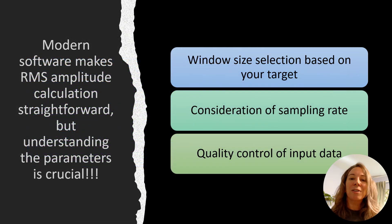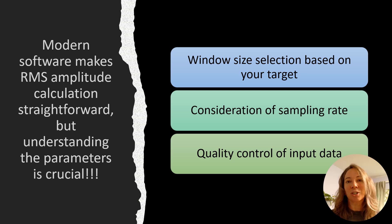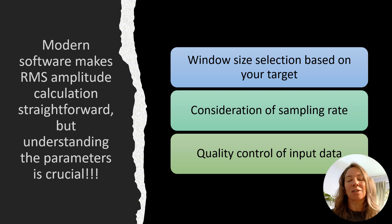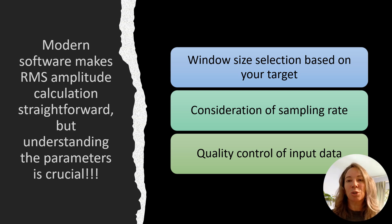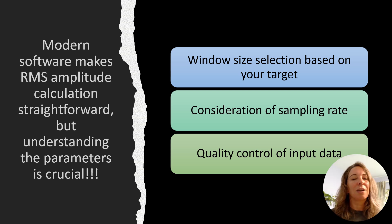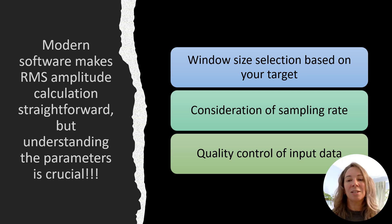While modern software has simplified RMS amplitude calculations into just a few clicks, success with this attribute hinges on understanding three key parameters. First, carefully select your window size based on what you're trying to detect. If it's too small, you might pick up noise; too large, and you might miss important details.